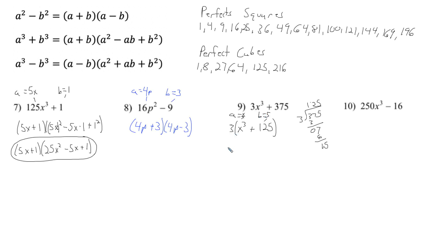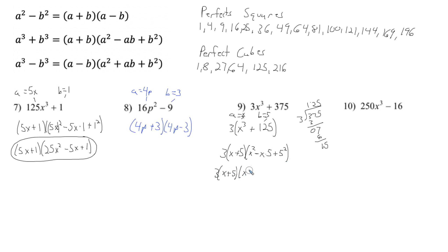Keeping the 3 out front and applying the sum of cubes pattern: 3(x + 5)(x squared minus 5x plus 25). The second set of parentheses simplifies to x squared minus 5x plus 25 — since 5 squared is 25. That's the answer for number 9.